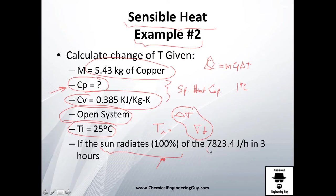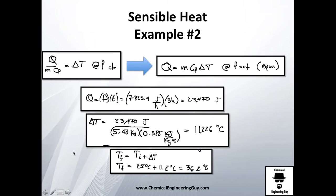They give us this amount of power, which is 7823.4 joules per hour, and they told us that this copper wire or copper tube, whatever the shape is, was three hours in the sun. This might sound tricky—you might say it's either a continuous process or a batch process.